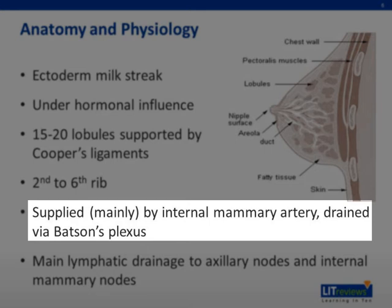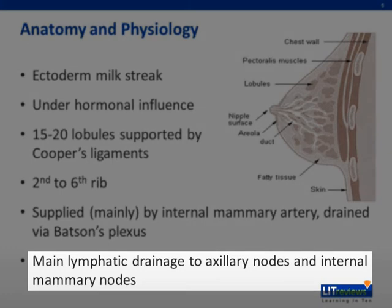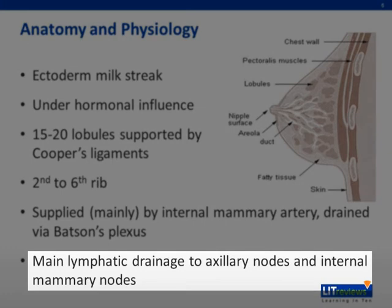Other arteries supplying the breast include the intercostal, thoracoacromial, and lateral thoracic arteries. The breast is drained by Batson's plexus, a valveless network of veins that connect the thoracic and pelvic veins to the internal vertebral venous plexus. It is thought that Batson's plexus allows hematogenous spread of cancer cells to the spine. Axillary lymph nodes provide approximately 97% of lymphatic drainage, with the remaining going to the internal mammary nodes.